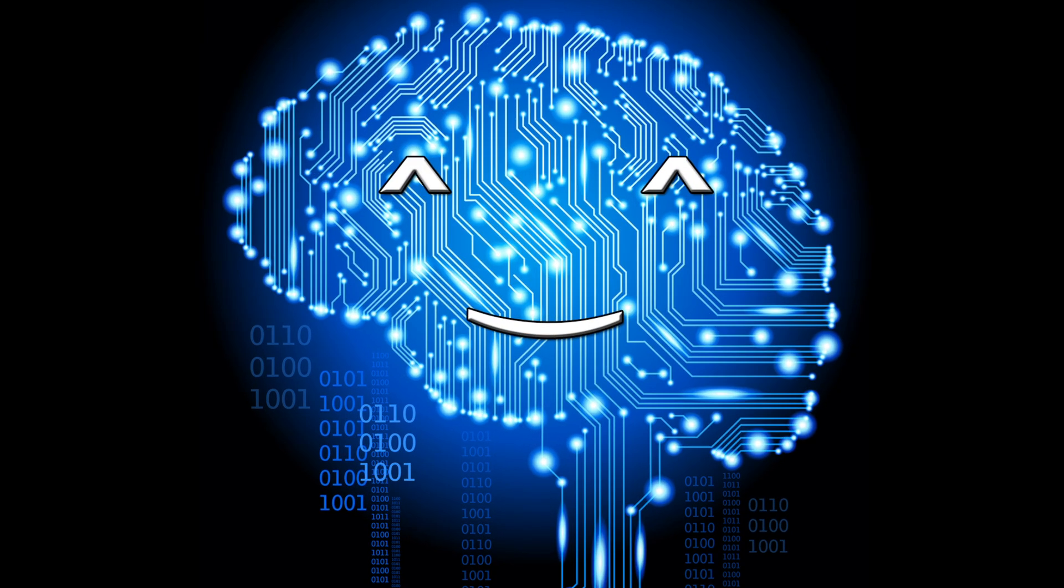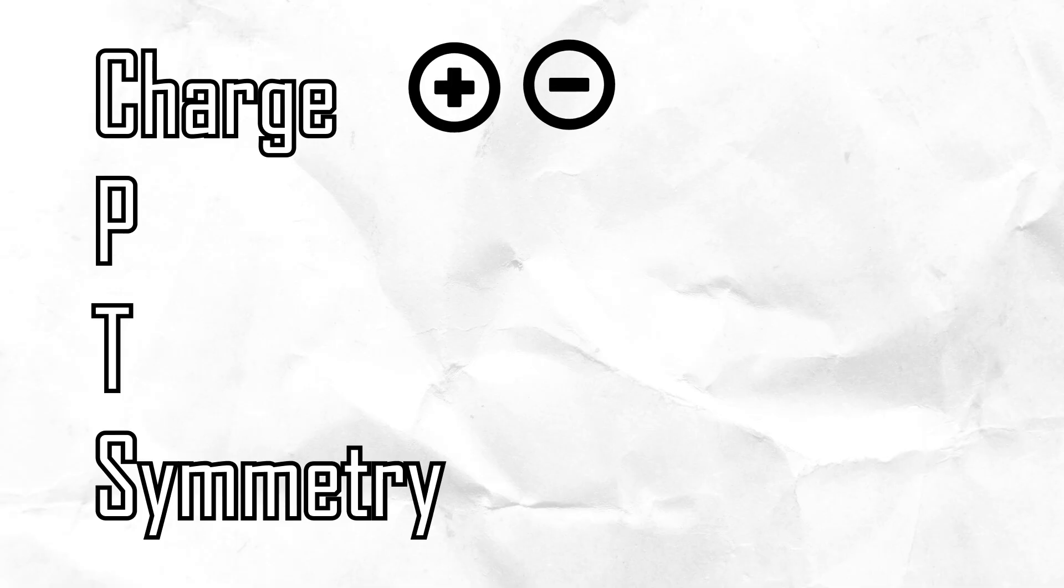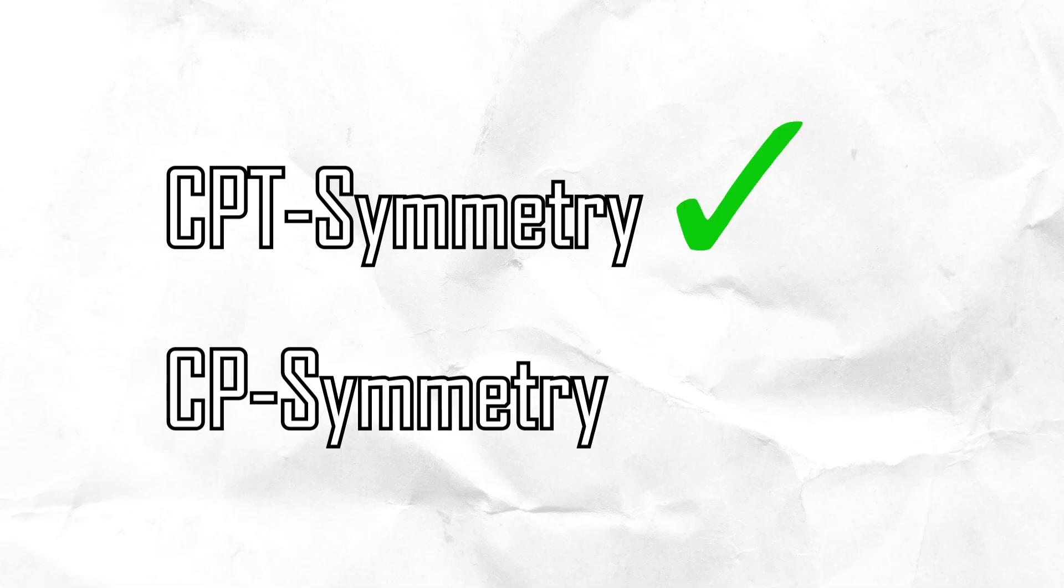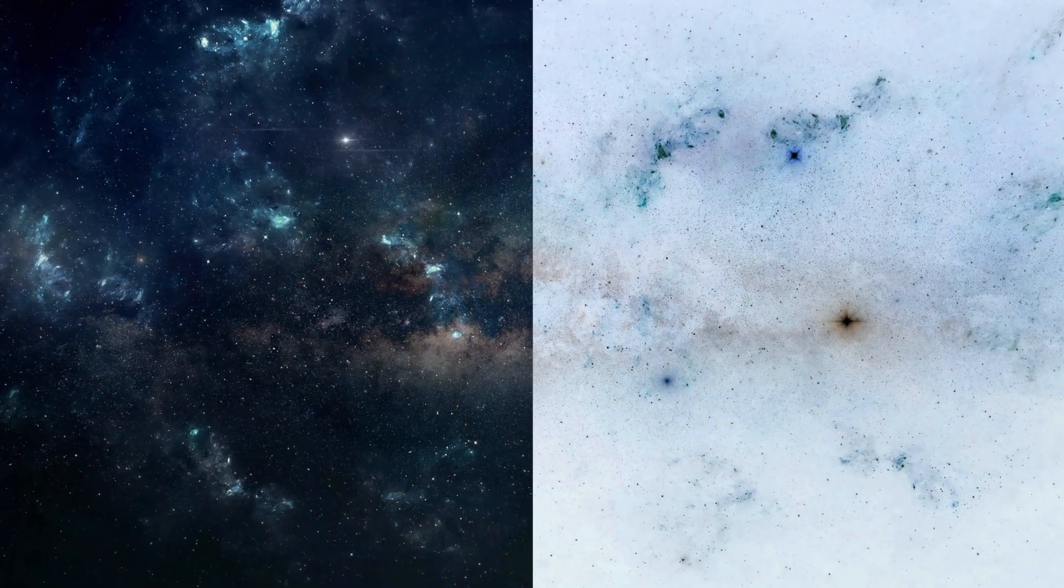Fortunately for scientists, one of the other assumed symmetries has held true, the CPT symmetry, charge, parity, and time reversal. Because CPT symmetry held true while CP symmetry did not, time reversal seems to be violated.